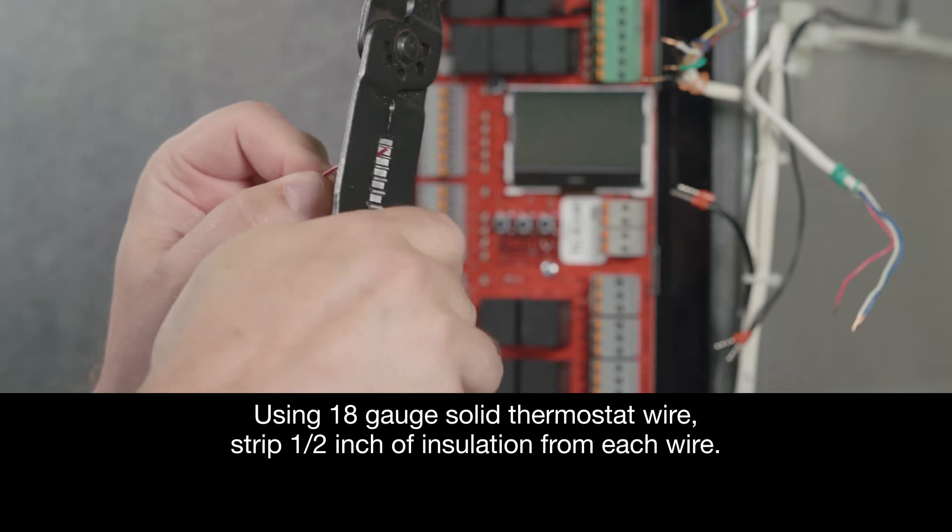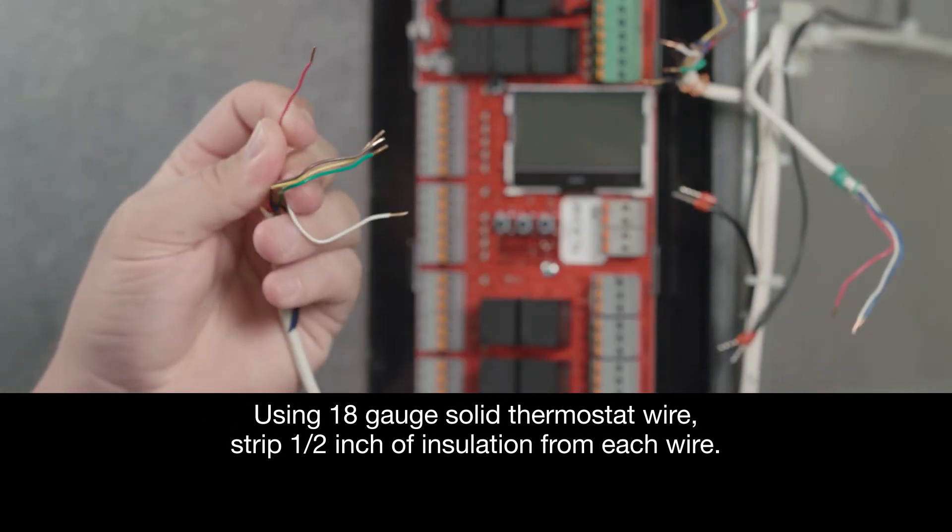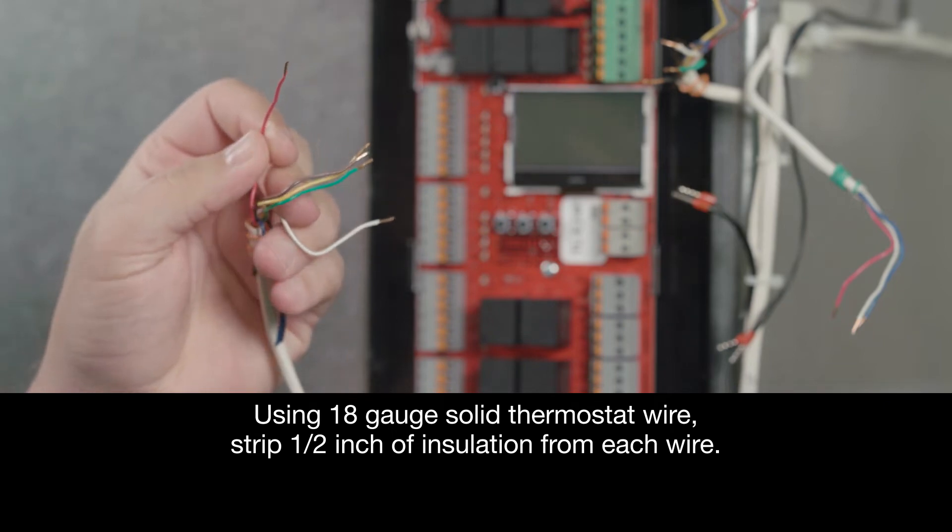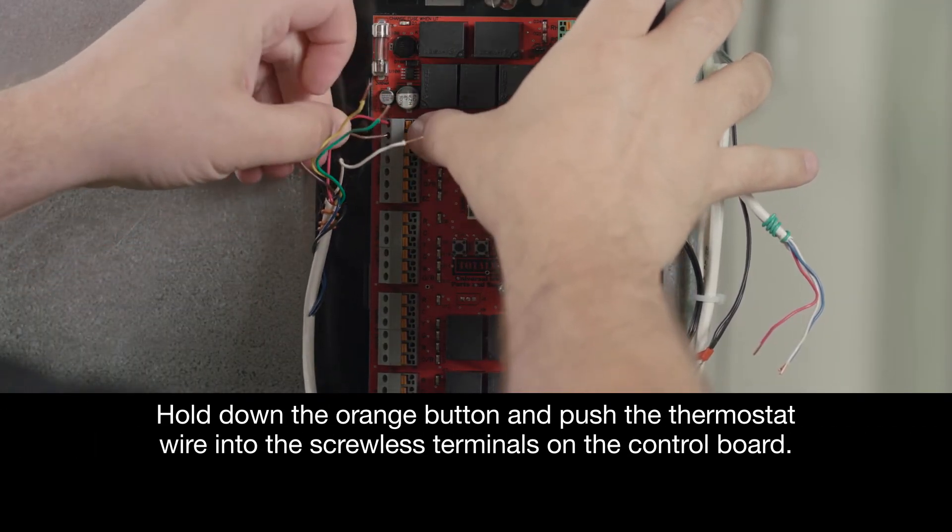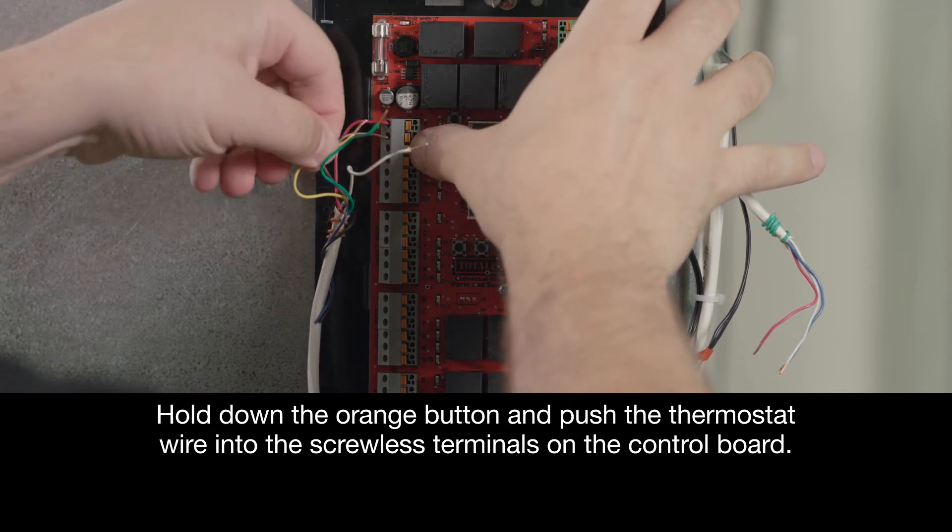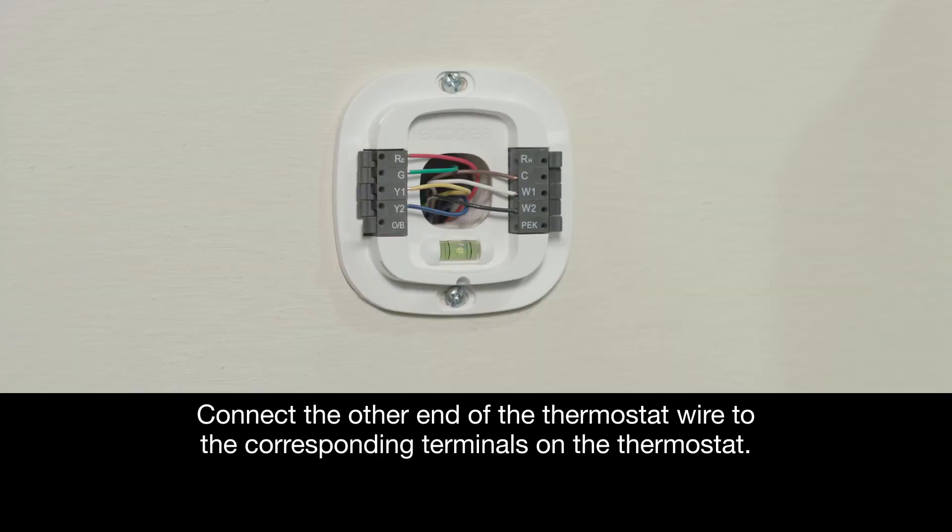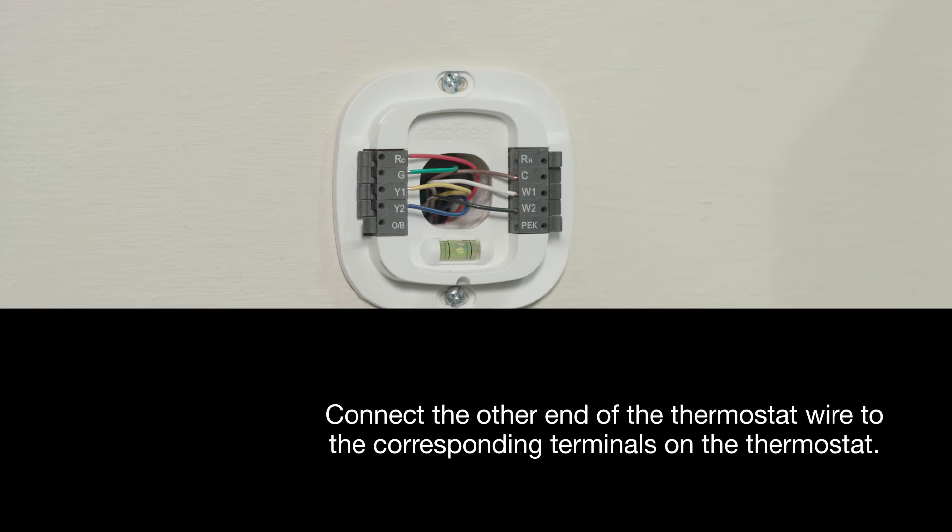Now, using 18-gauge solid thermostat wire, strip a half an inch of insulation from each wire. Hold down the orange button and push the thermostat wire into the screwless terminals on the control board. Then, connect the other end of the thermostat wire to the corresponding terminals on the thermostat.